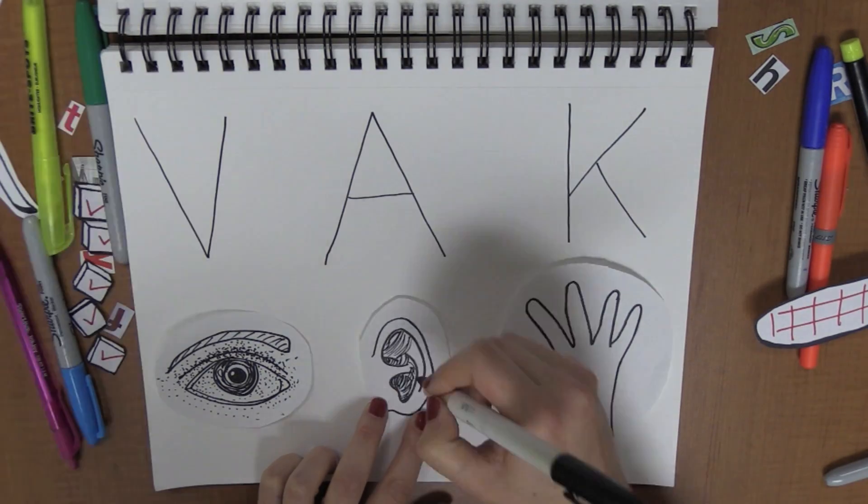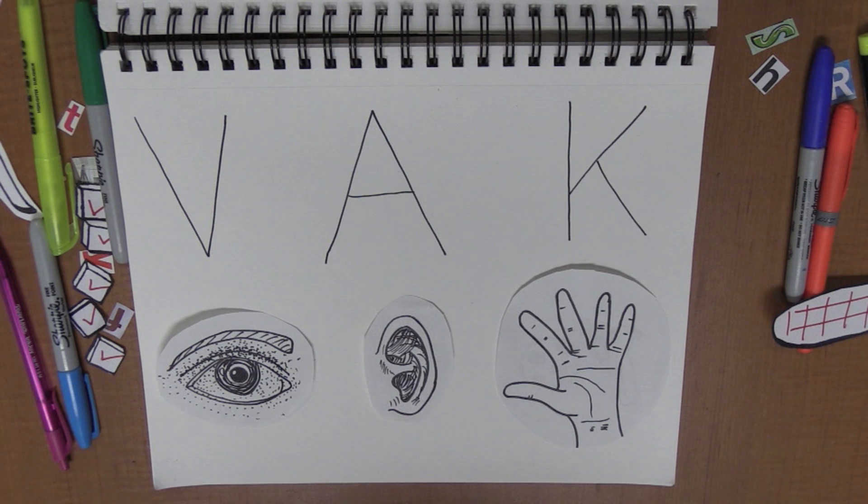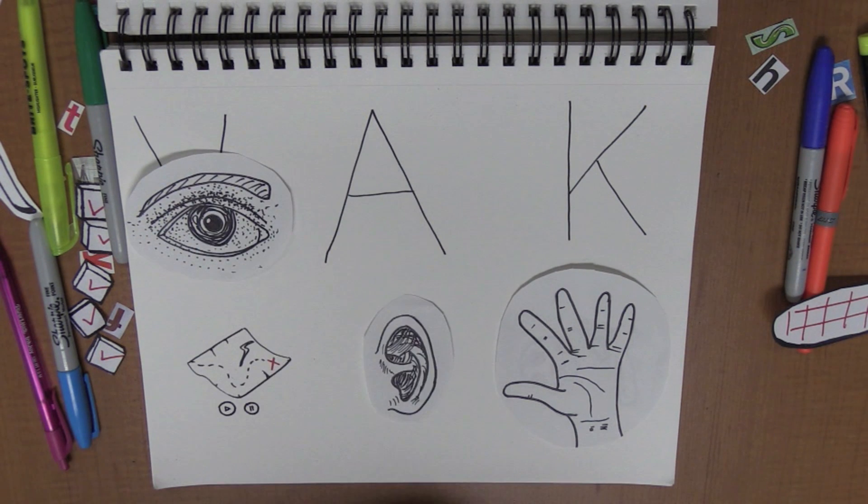Each type describes the way in which you best learn information. If you're a visual learner, you prefer to receive information visually. You might look for diagrams, maps, pictures, and videos to learn a new concept.